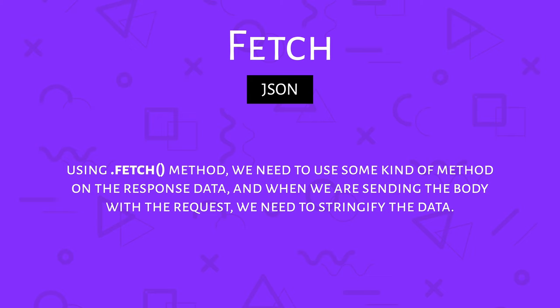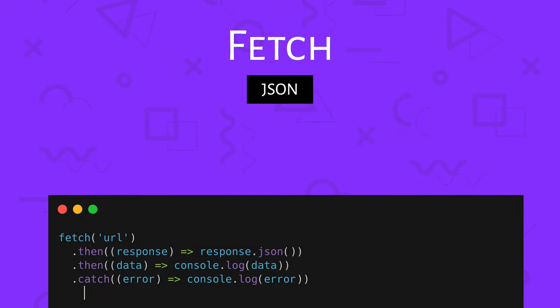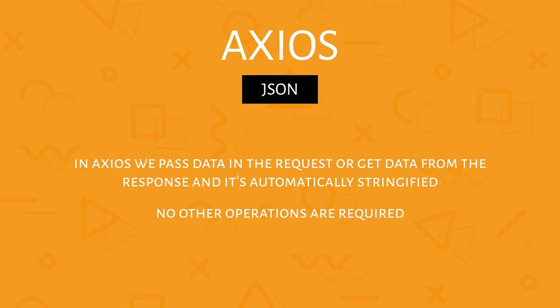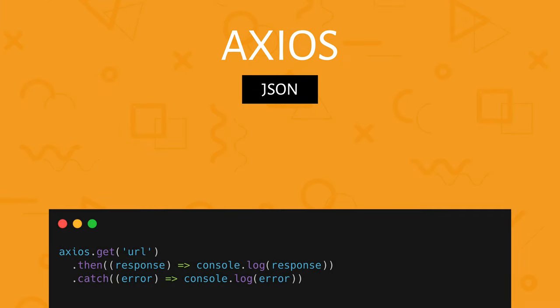Now let's compare how both methods work with JSON. With Fetch, when receiving a response we need to call a method like response.json() on the response data, and when sending a body we need to stringify the data. With Axios, the data in requests and responses is automatically stringified — no other methods or operations are required. As you can see in the code example, with Axios we just need one .then() and that's it.